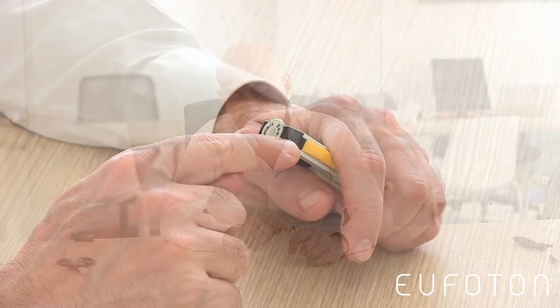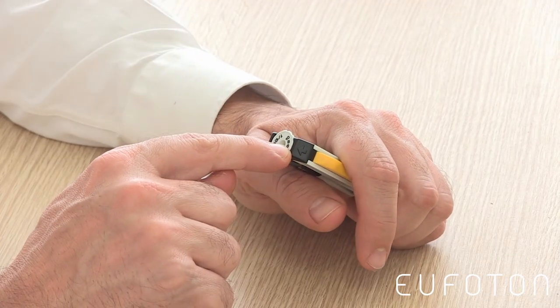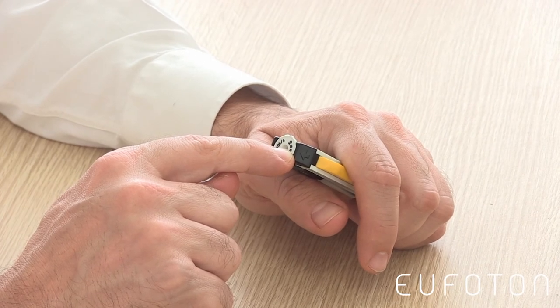This is a 600 micron fiber, so the arrow must be put in correspondence with the number 6.